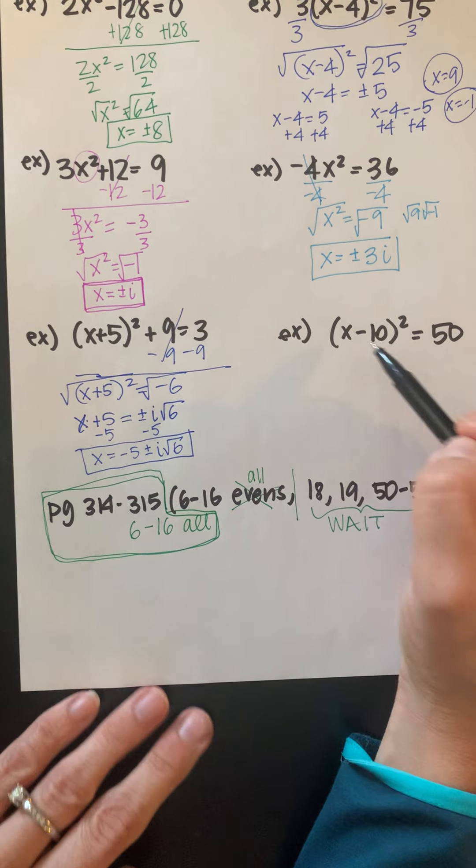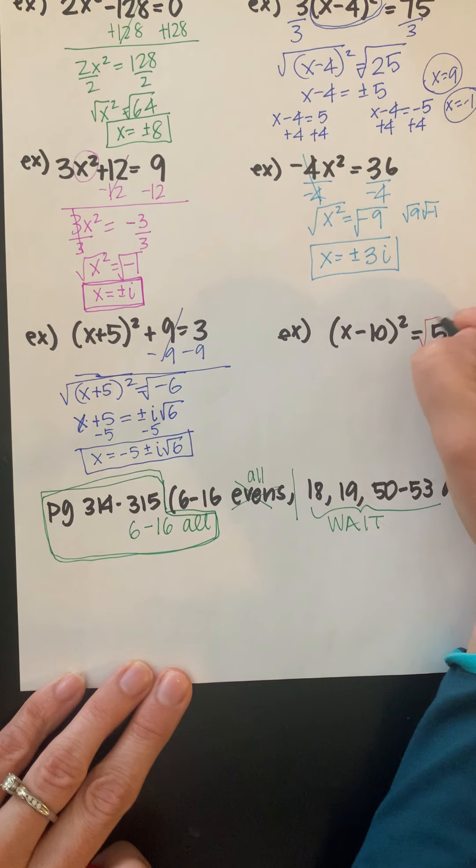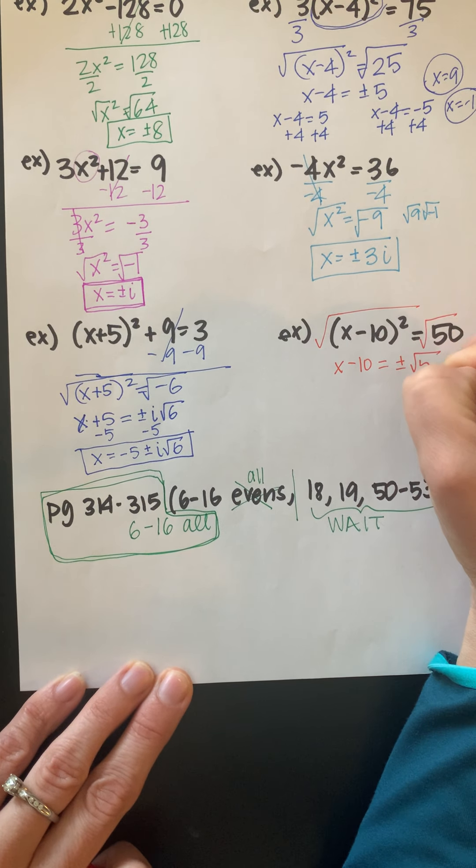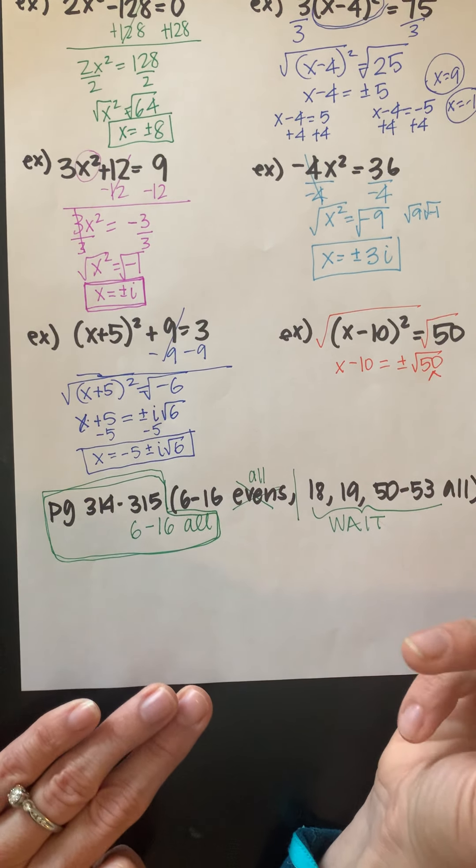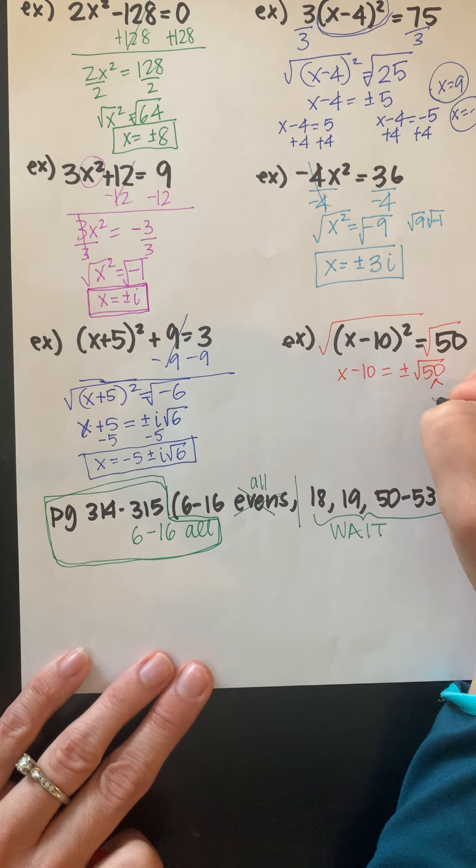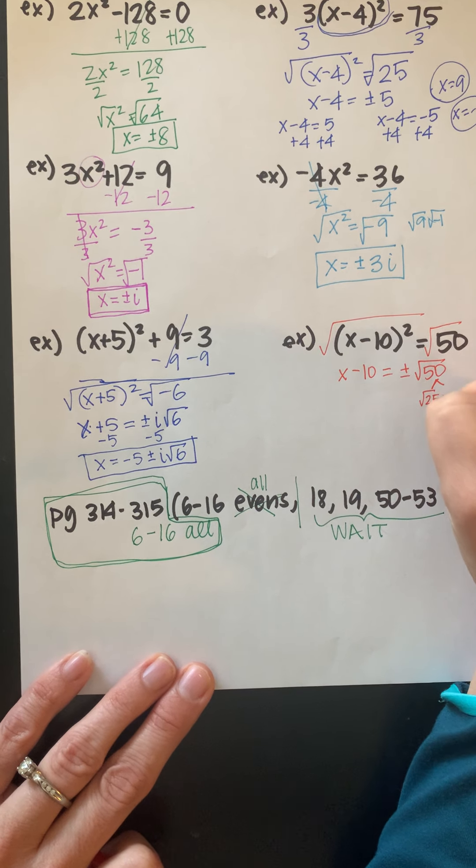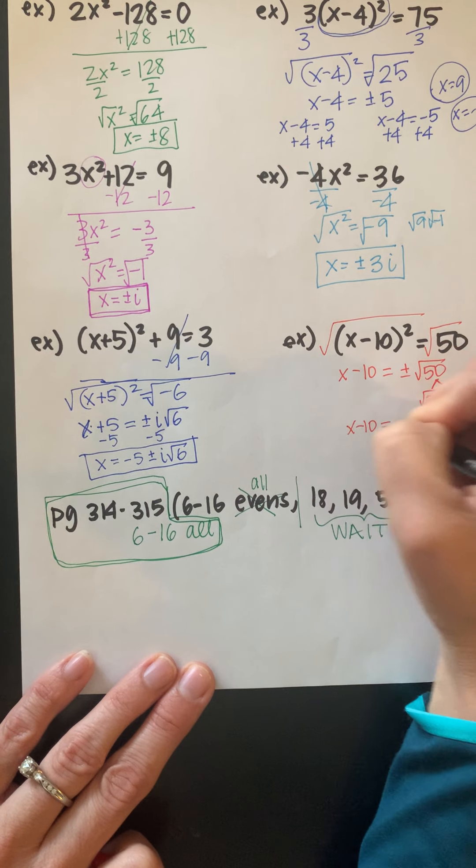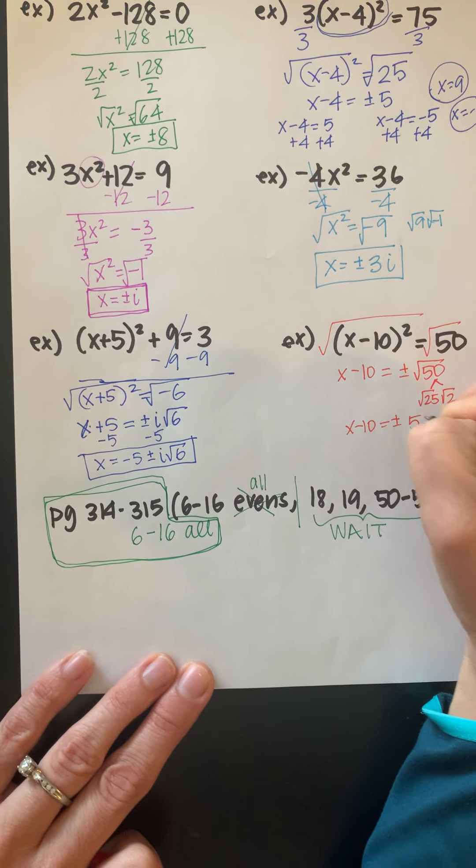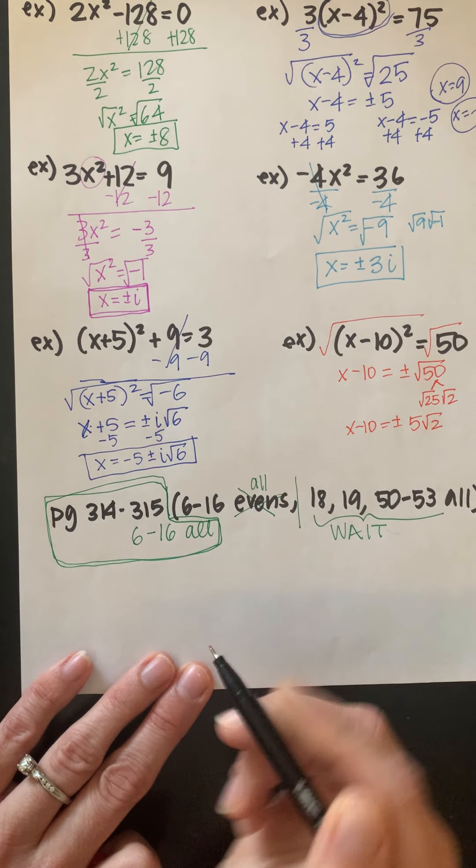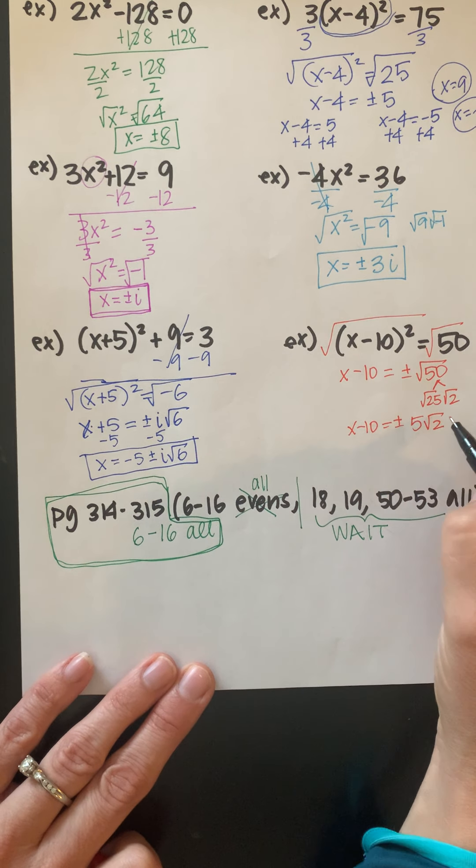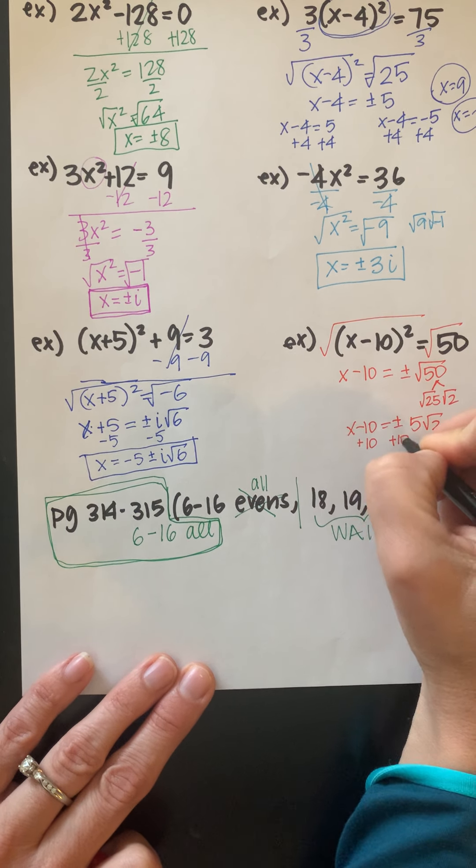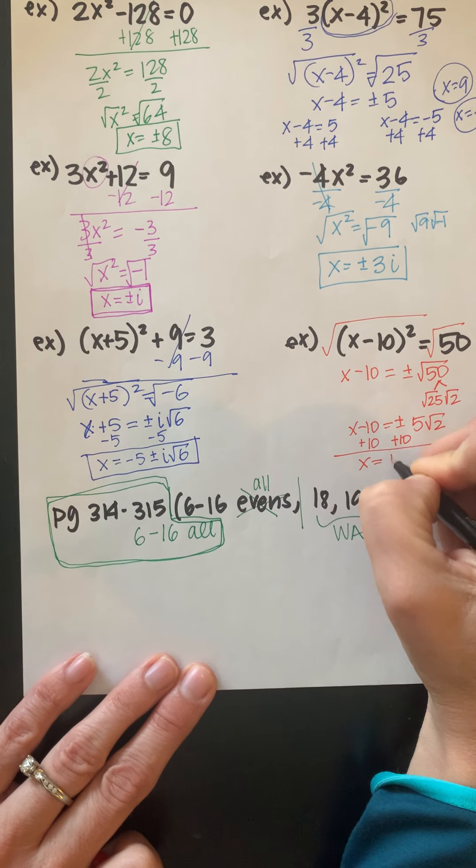And then here, this is already isolated. So I'm ready to take the square root of each side. Plus or minus the square root of 50. Now square root of 50 is not a perfect square, but I can break this up. 25 times 2. Square root of 25 is 5. So it's going to be plus or minus 5√2. And then I just need to move this 10 over. So x equals 10 plus or minus 5√2.